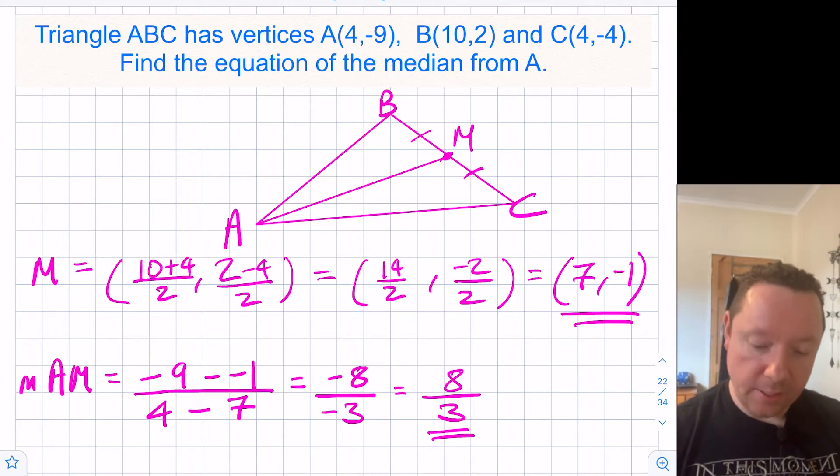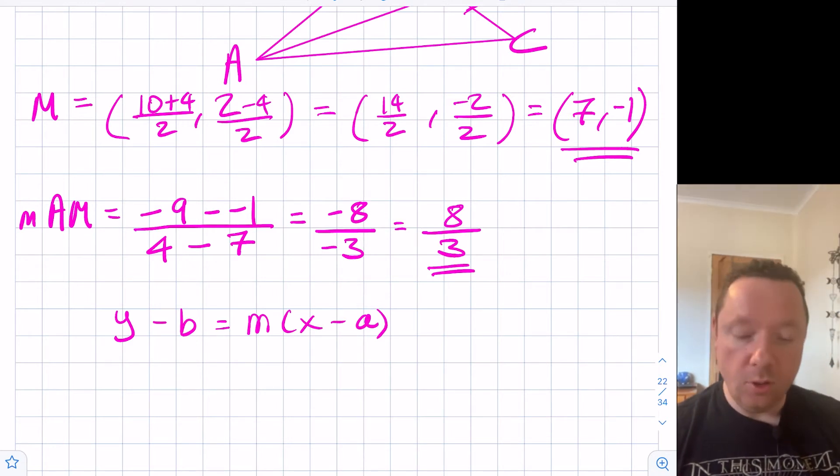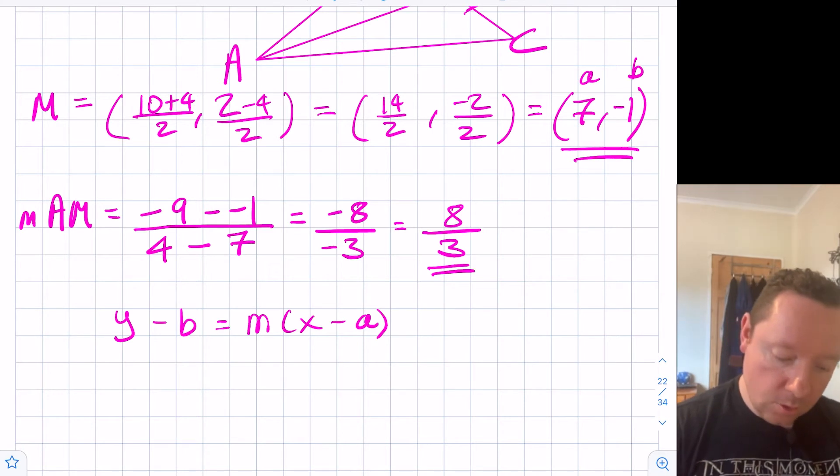So now we can do y minus b equals m(x minus a) using either the point that we found out as the midpoint or the vertex. I'll use the midpoint so that's going to be my a and b. So I've got y minus -1 equals 8 thirds (x minus 7).